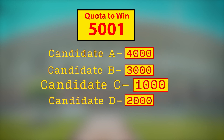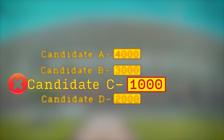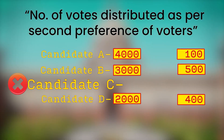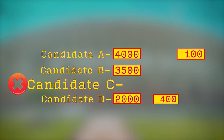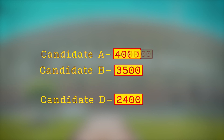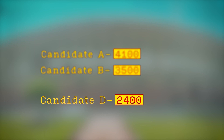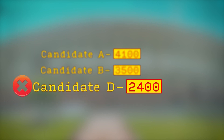The vote distribution is as follows. Since candidate A with the highest votes has failed to receive the quota to win the election, candidate C will be eliminated, and the 1,000 votes received by C will be distributed among the other candidates according to their second preference. Say out of 1,000 votes, 500 go to candidate B as the second preference, 400 go to candidate D, and 100 go to candidate A.